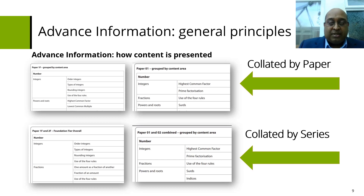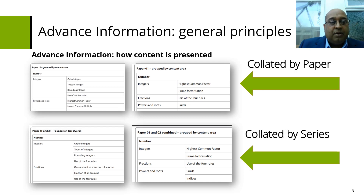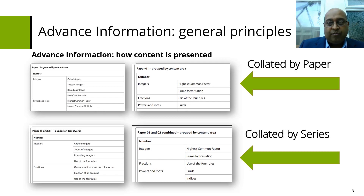Speaking about how the information is presented: when you go into the advanced information, you'll notice firstly that we've organised it by paper. For Maths A, where you have higher and foundation, we start by listing all the topics in the foundation paper. For Maths B, which is only offered at higher, it's labelled as paper one and paper two. Further down, the information is grouped by series, putting all of the advanced information together for that series. At the end there is a summary of all the advanced information for those papers.